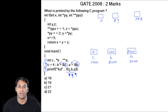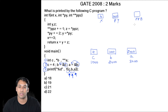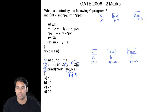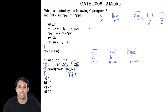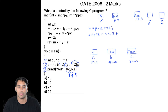Here py is a pointer pointing to a variable, and ppz is a pointer pointing to a pointer, which in turn points to a variable. When we call this function, x = 4, py = 1000, and ppz = 2000. The function also has two more variables, y and z. The next line is: **ppz += 1, which can be written as **ppz = **ppz + 1.